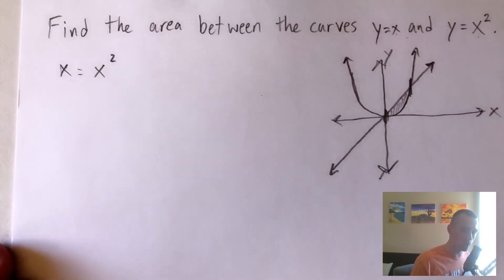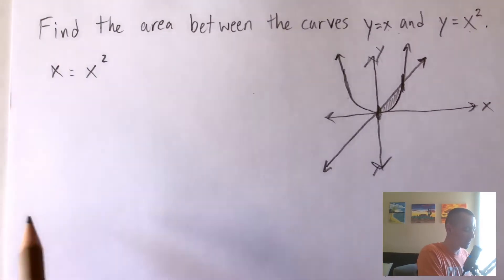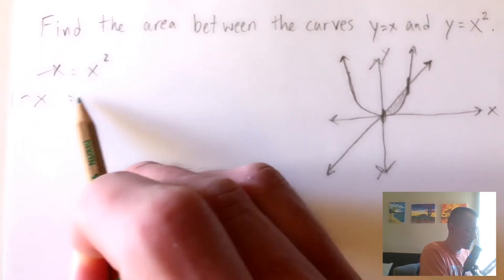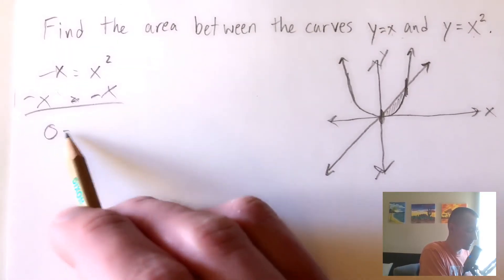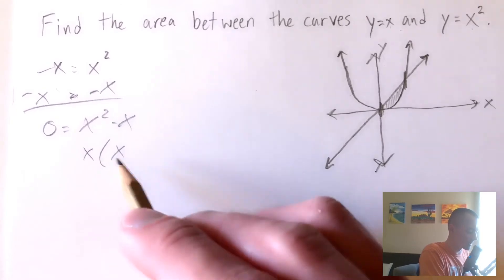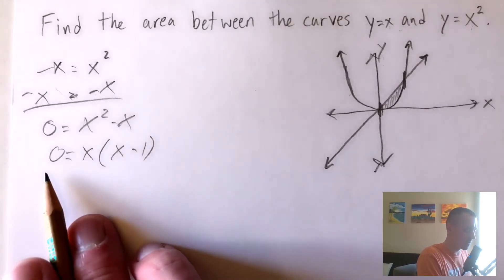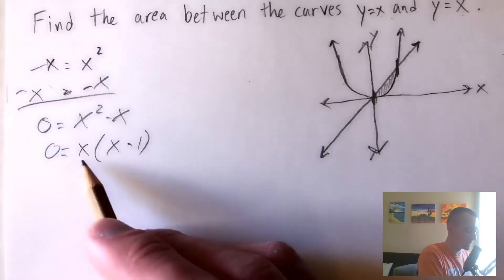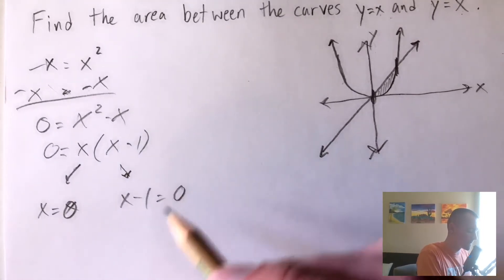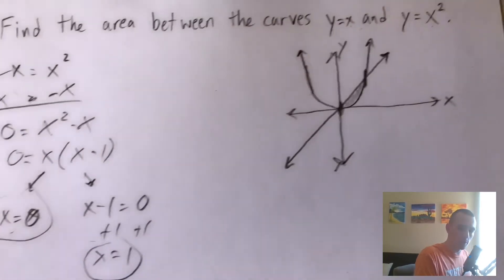So we take x and set it equal to x squared and solve for x to find where these functions intersect. Since we have an x squared and an x term, the easiest approach is to get everything on one side: subtract x from both sides to get zero equals x squared minus x. Then we factor out an x to get x times (x minus one). Since the product equals zero, either factor can be zero, giving us x equals zero and x equals one.